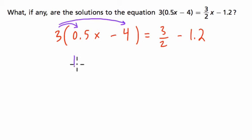All right, so 3 halves is just 1 and a half. So 1 and a half x minus 12, because 3 times 4 is 12, equals 3 halves x minus 1.2, right? So 1.2.